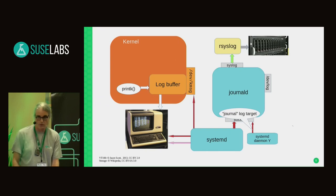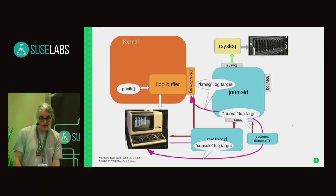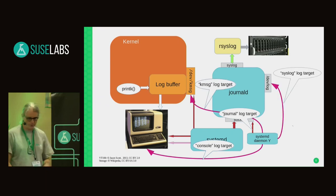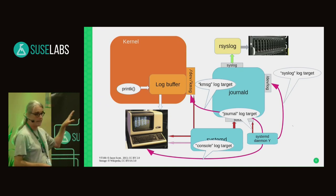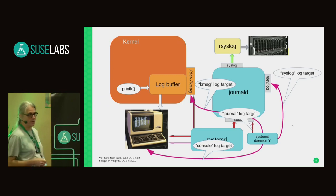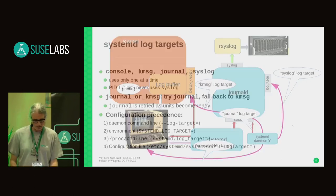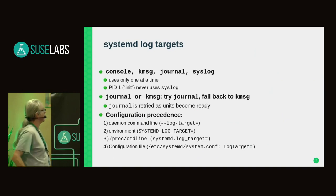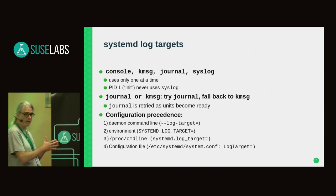These daemons also evaluate the same command line options and environment variables that systemd itself uses. They have journal, console, kmsg, and syslog log targets. The syslog target is a little special because systemd itself, when running as PID 1, cannot use it — for the obvious reason that the rsyslog daemon is usually not running at that point. Daemons always use only one target at any time, so the message will only go to one of these targets. There are also combined targets such as "journal-or-kmsg".